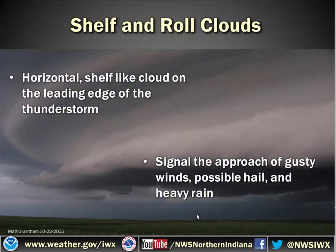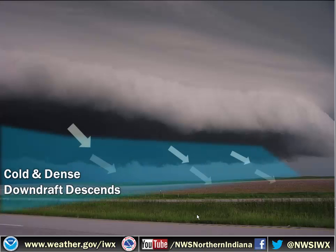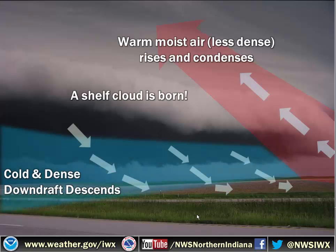Another type of cloud is a shelf and a roll cloud. These are really common in the Great Lakes region — we typically see these with bow echoes or lines of storms. These are basically a horizontal cloud on the leading edge of a thunderstorm, and they look like shelves, hence the name shelf cloud. They signal the approach of gusty winds, possibly hail and heavy rain. How do they form? As cold air comes down from the downdraft, it hits the ground and spreads out ahead of the storm. The warm, moist air ahead of that rises because it's less dense and condenses to form a cloud — so you get a shelf cloud.